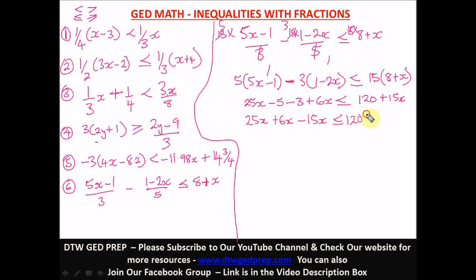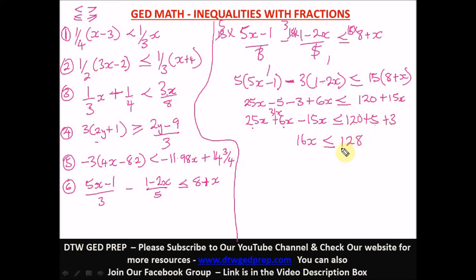Collecting like terms: 25x plus 6x minus 15x — wait, taking 60x to the left gives negative 60x, so 25x plus 6x minus 60x, actually let me re-state: 25x plus 6x minus 15x on the left gives 16x. On the right: 120 plus 5 plus 3 gives 128. Dividing both sides by 16: x is less than or equal to 128 divided by 16, which is 8.